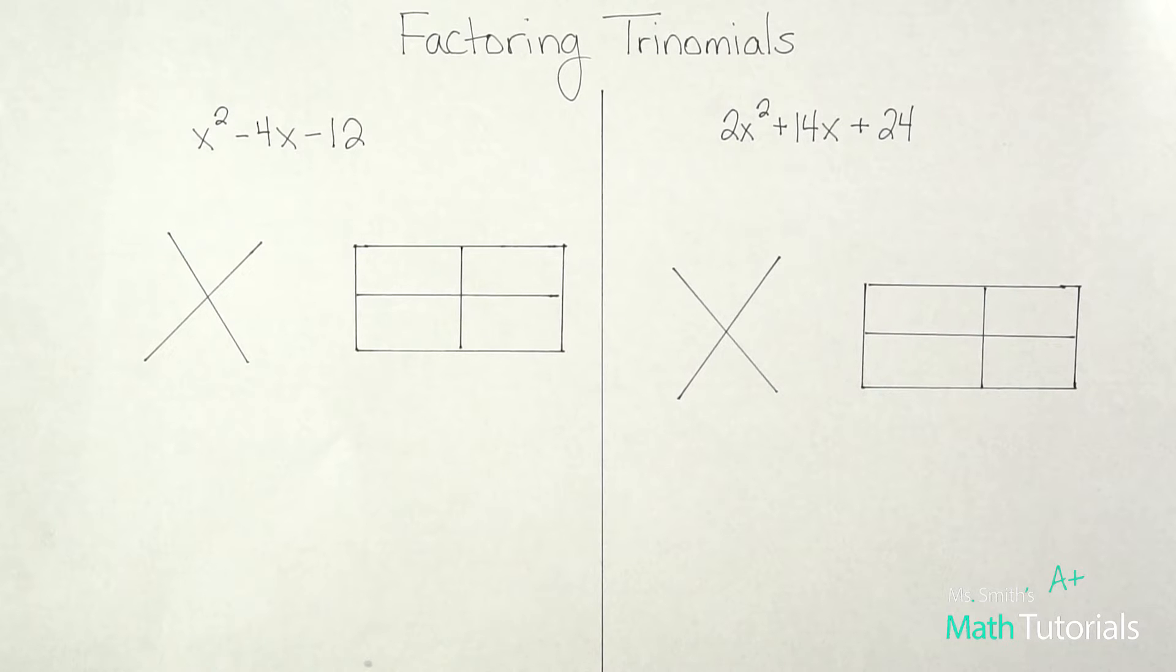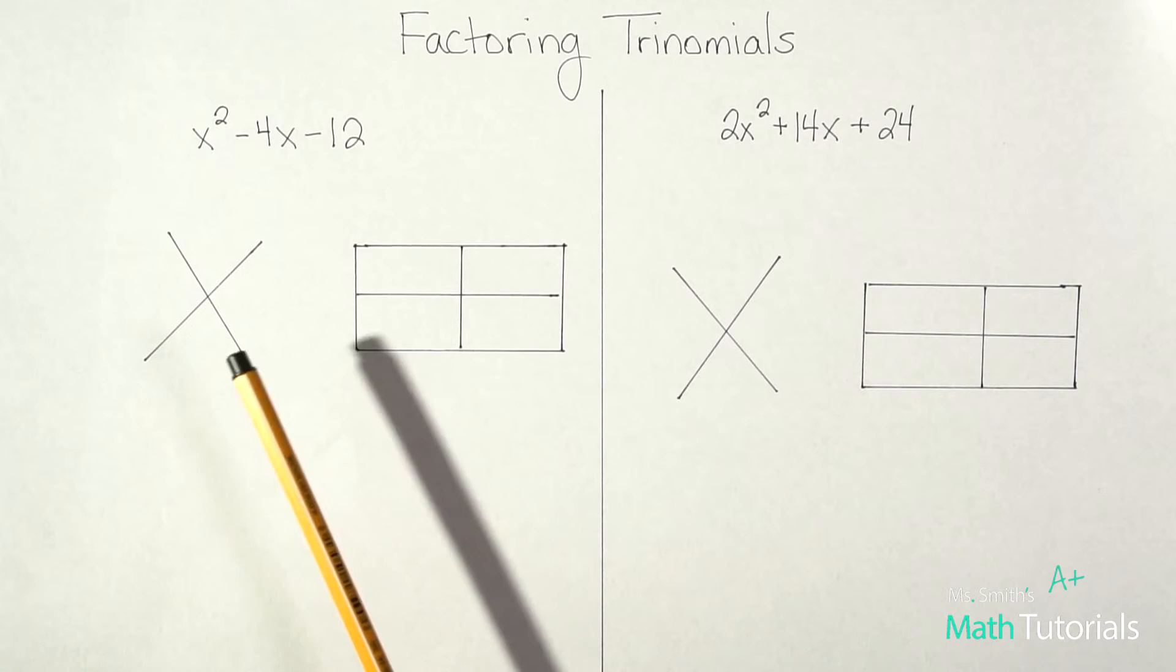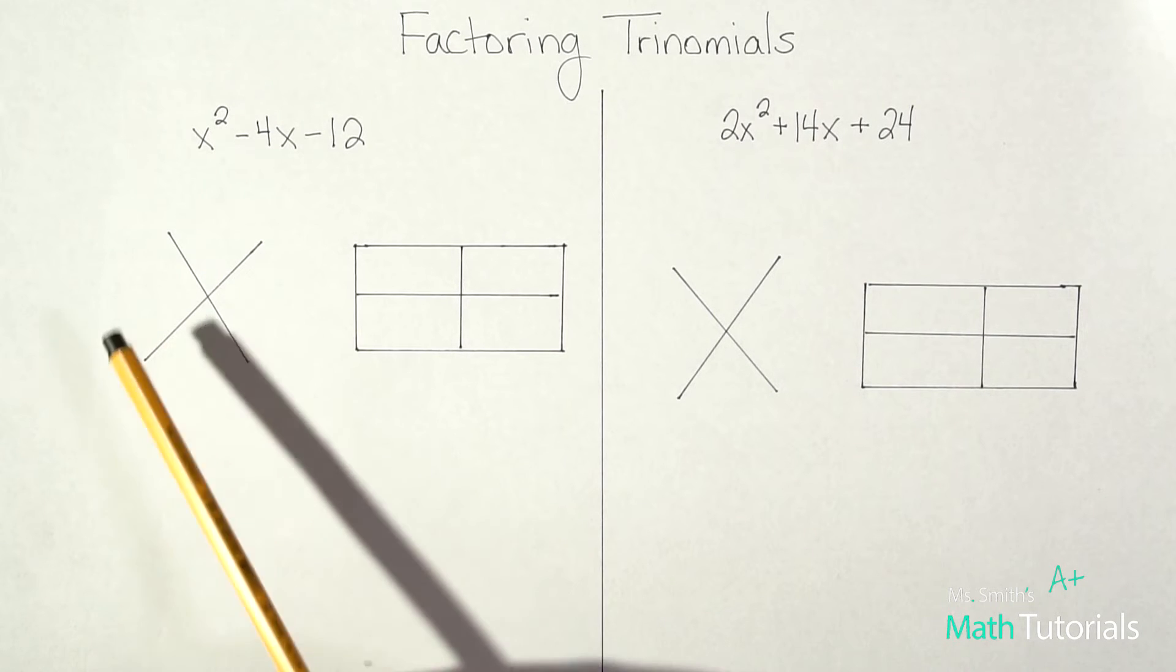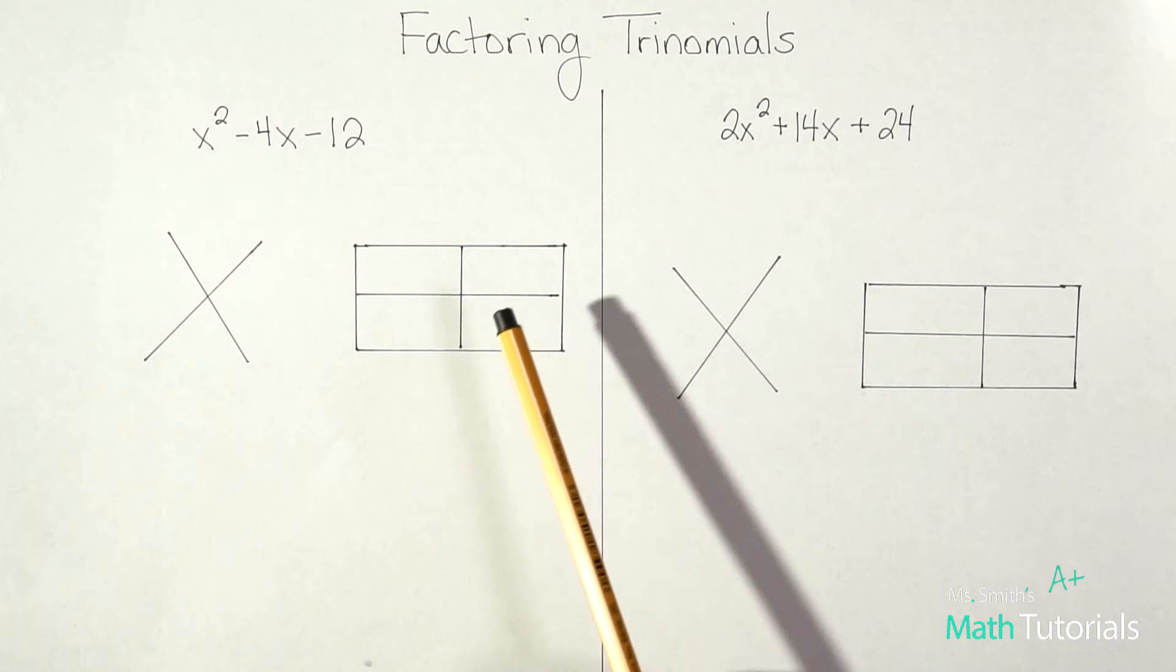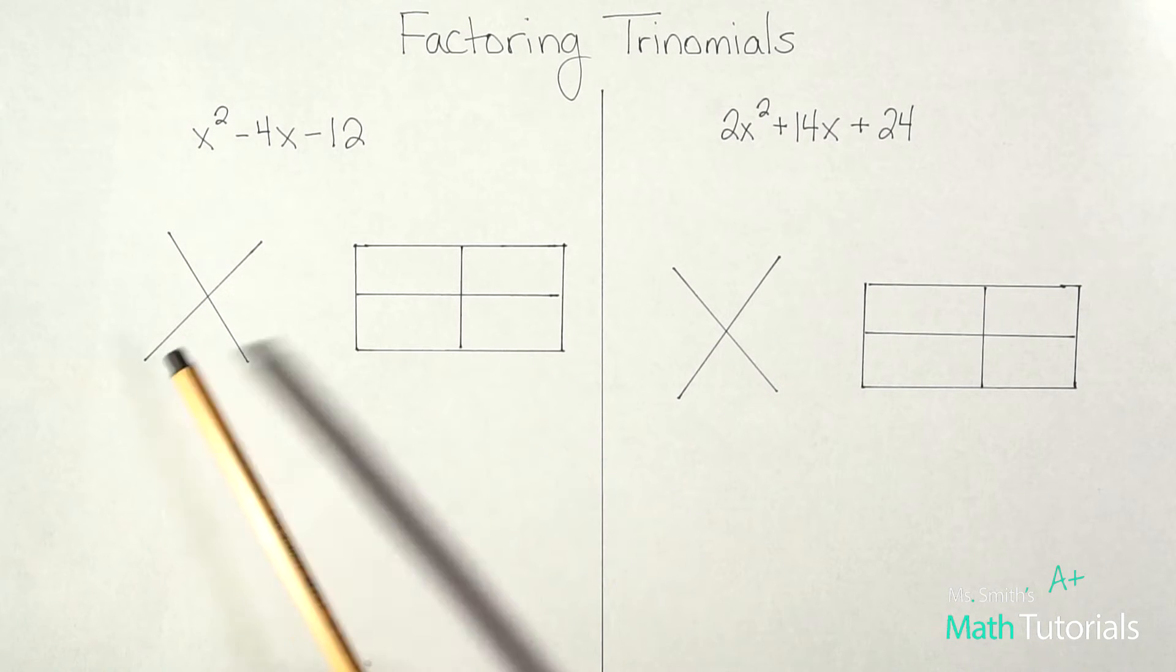In this video we're talking about factoring trinomials and I am going to show you an alternate way of factoring. We call this method the X box method. This X we use, I used in my other more traditional factoring video. We'll use that again. This is kind of called the AC method using this box. But we're going to throw another box in there. So we call it X box. So let's just dive right in.